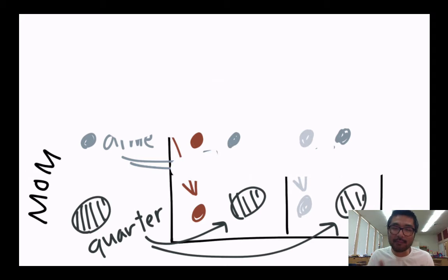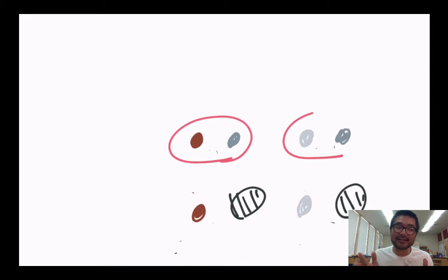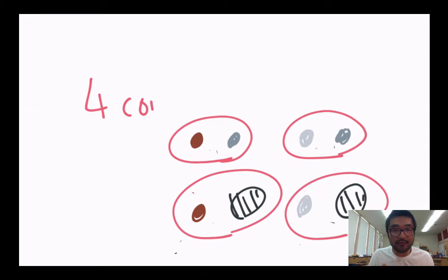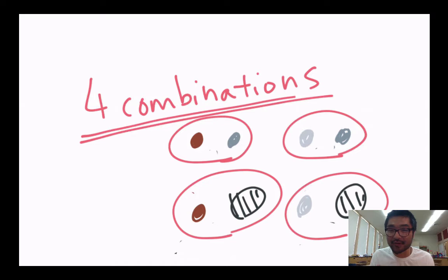And that's what a Punnett Square is. We can use the same technique to find out what kind of combination of alleles you get from two parents.